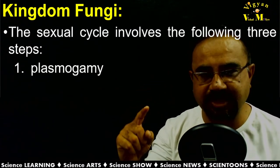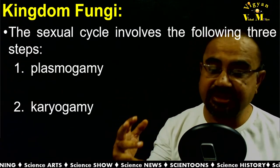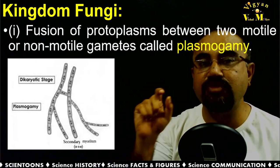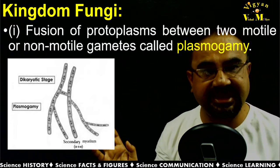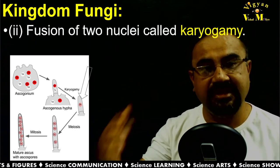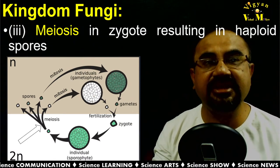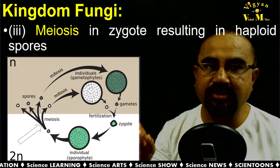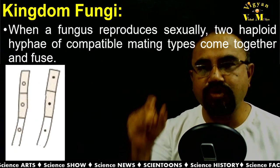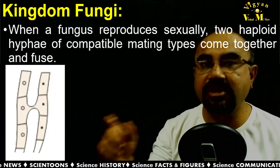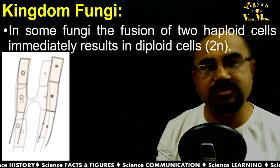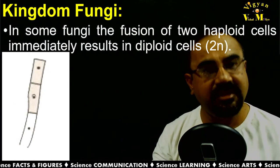Reproduction is divided into three stages: plasmogamy, karyogamy, and meiosis. Plasmogamy is the fusion of protoplasm between two motile or non-motile gametes. Karyogamy is where two nuclei are joined, followed by meiosis — the reductional division — where haploid spores are produced from the diploid zygote. When fungi reproduce sexually, two haploid hyphae or compatible mating types fuse — this is plasmogamy.